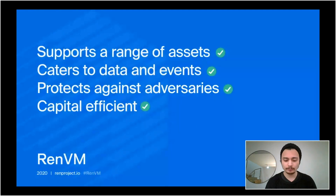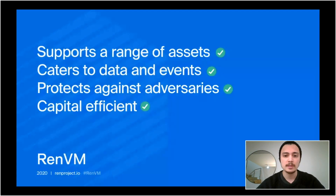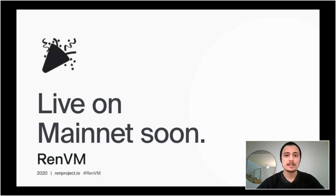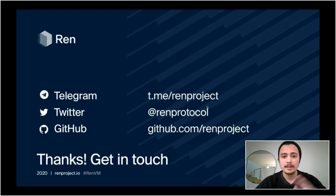So RenVM has all of these features bundled together. It supports Zcash, Bitcoin Cash, Bitcoin, and Ethereum today, but can work on theoretically any two pairs of blockchains. It can bounce a single transaction through multiple chains and multiple applications in a single go, so the user never has to experience wrapping and unwrapping. It protects itself against adversaries using the mechanisms we described, allowing it to remain capital efficient in the face of increased demand. We'll be live on mainnet very soon — expected sometime this month, targeting a mid-to-late May release. If you want to learn more or start building with it, come check us out on Telegram, follow us on Twitter, check out our GitHub, get in touch, and let us know if you have any criticisms or questions.